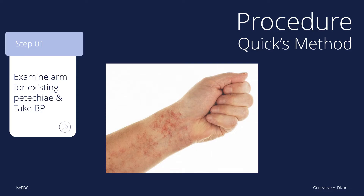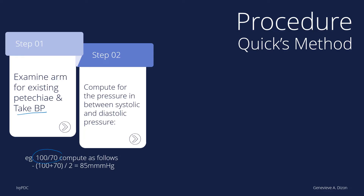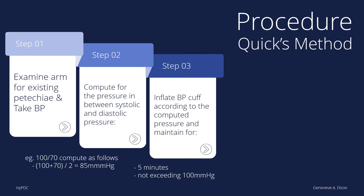After examining for any petechiae, take the blood pressure of the patient. For example, if we obtain a blood pressure of 100 over 70, we compute the pressure in between the systolic and diastolic: we add 170 and divide by 2, giving us 85 mmHg. We then inflate the BP cuff and maintain this pressure of 85 mmHg for 5 minutes. For patient safety, the blood pressure used in this step should not exceed 100 mmHg.